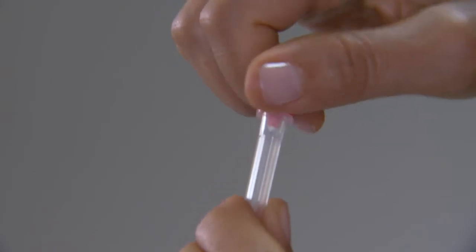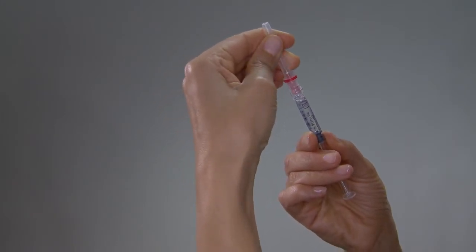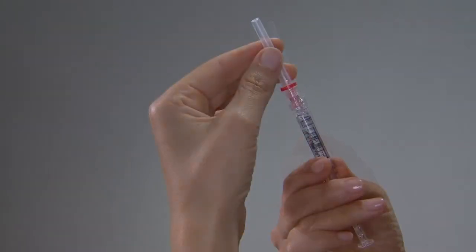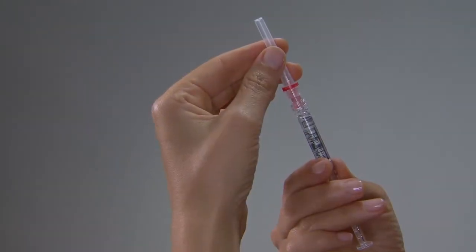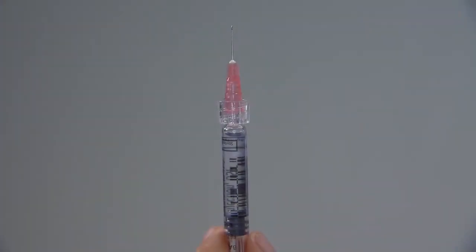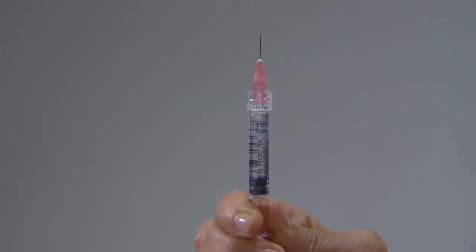Remove the safety seal cover from the 29-gauge 1⁄2-inch red needle. Twist the needle onto the pre-filled syringe until it is tightened, being careful to keep the protective cap in place. Holding the barrel of the pre-filled syringe, carefully remove the needle cap. With the syringe pointing upward, gently tap on the syringe. Slowly push the plunger until all of the air bubbles are gone.